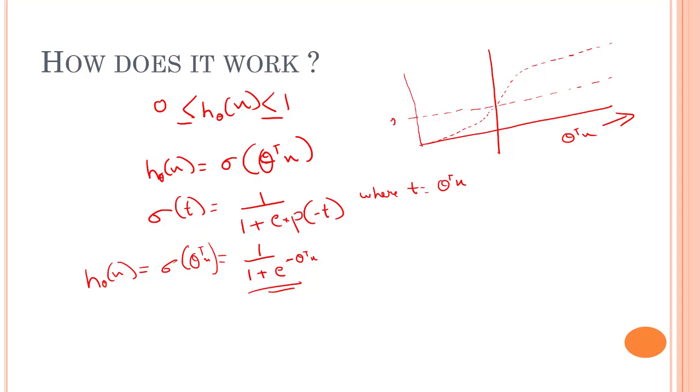We have this threshold value. What is this threshold value? This is 0.5, this is 0, and this is 1. What the sigmoid function does is anything that is above this threshold value will be counted as 1, and anything below this 0.5 value is counted as 0. That's exactly how our sigmoid function works.